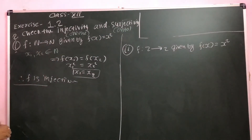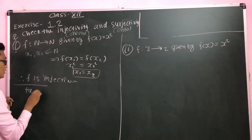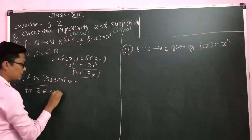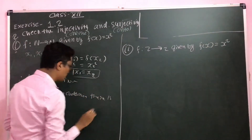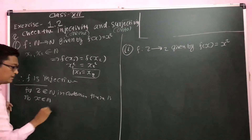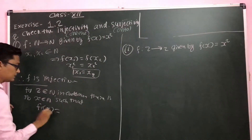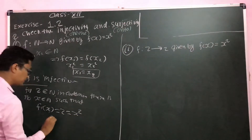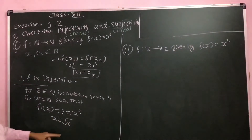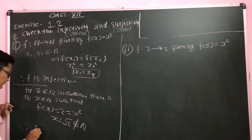Now for surjectivity, we need to find a value in the codomain with no preimage. Take 2, which belongs to ℕ in the codomain. There is no x belonging to ℕ such that f(x) = x² = 2, because √2 does not belong to ℕ. So hence f is not surjective.